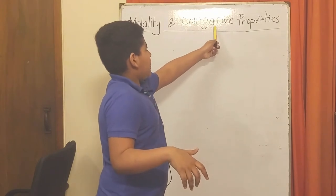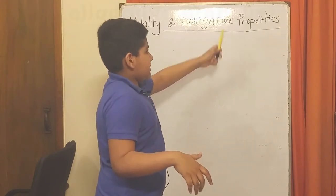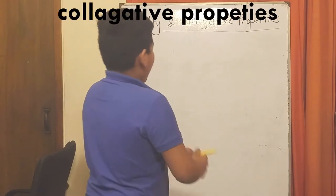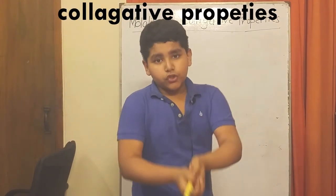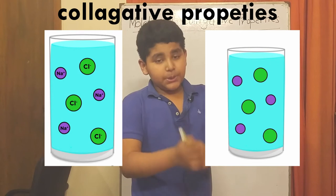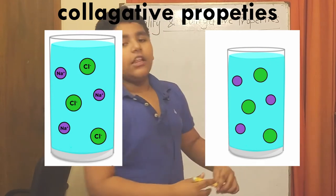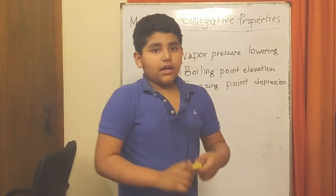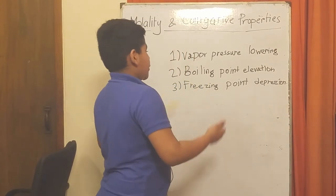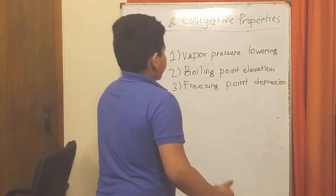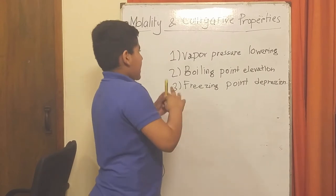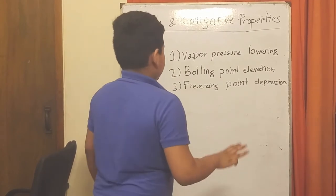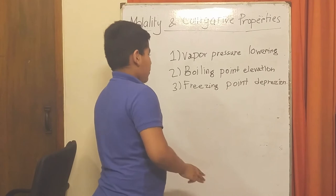Colligative properties depend more on the concentration of the solute than the chemical identity of it. Adding solute to the solution changes three things that give three phenomena: vapor pressure lowering, boiling point elevation, and freezing point depression.